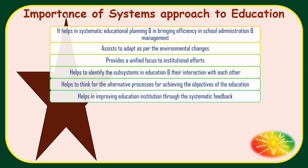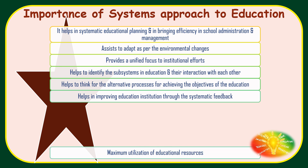It helps in improving education institution through systematic feedback. So environment ke alawa ek aur important cheez hai that is feedback system. So systems approach mein because there is a feedback system, dheere dheere aur education mein aur improvement hota hai. Because feedback ke hisaab se modifications kiye jaate hai, replanning ki jaati hai, so that the things are processed more effectively aur ek achha output nikle as per the objectives of the educational institution.